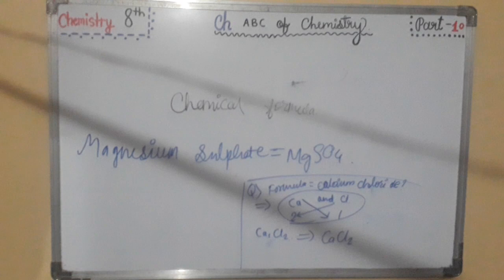The criss cross method summary is, step one is, write the symbols of the combining units side by side. Cation on LHS and anion on RHS. Note that the combining units can be atoms, radicals or group of atoms.